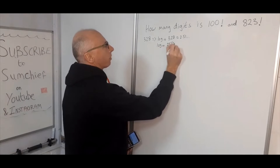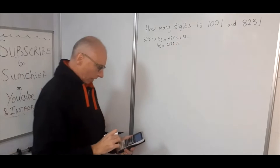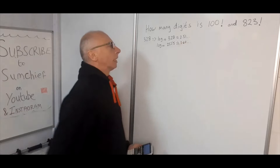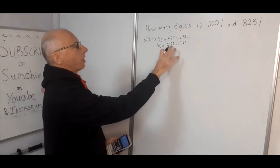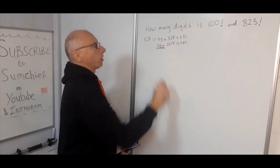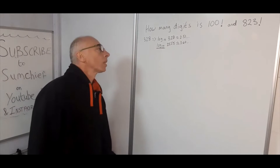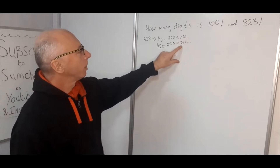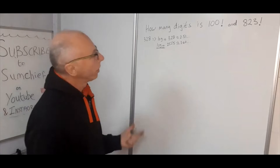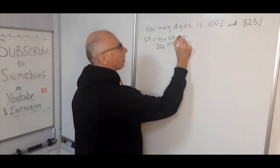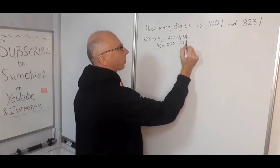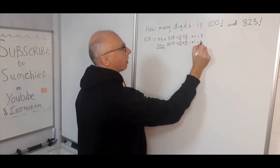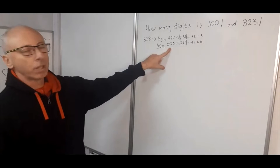Let's try another number: log base 10 of 2555 gives us 3.40. We can see this function is going to be very useful. In every case, if we take the integer part — the floor — of log base 10 and then add one, that gives us the number of digits. So floor(log₁₀(328)) + 1 = 3, and floor(log₁₀(2555)) + 1 = 4.